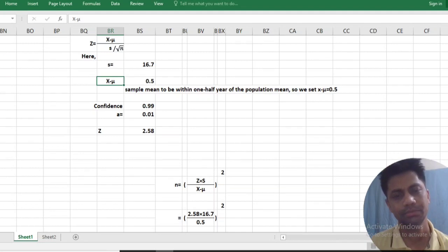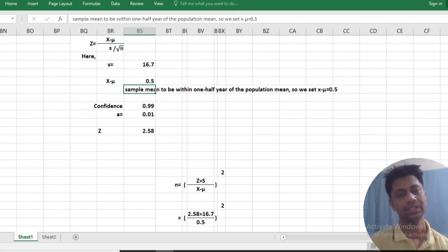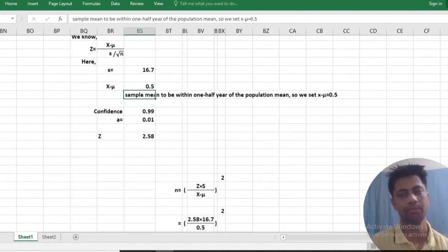Mu x-bar minus mu is 0.5. How? Sample mean have mean to within one half year of the population, so we can set it 0.5.